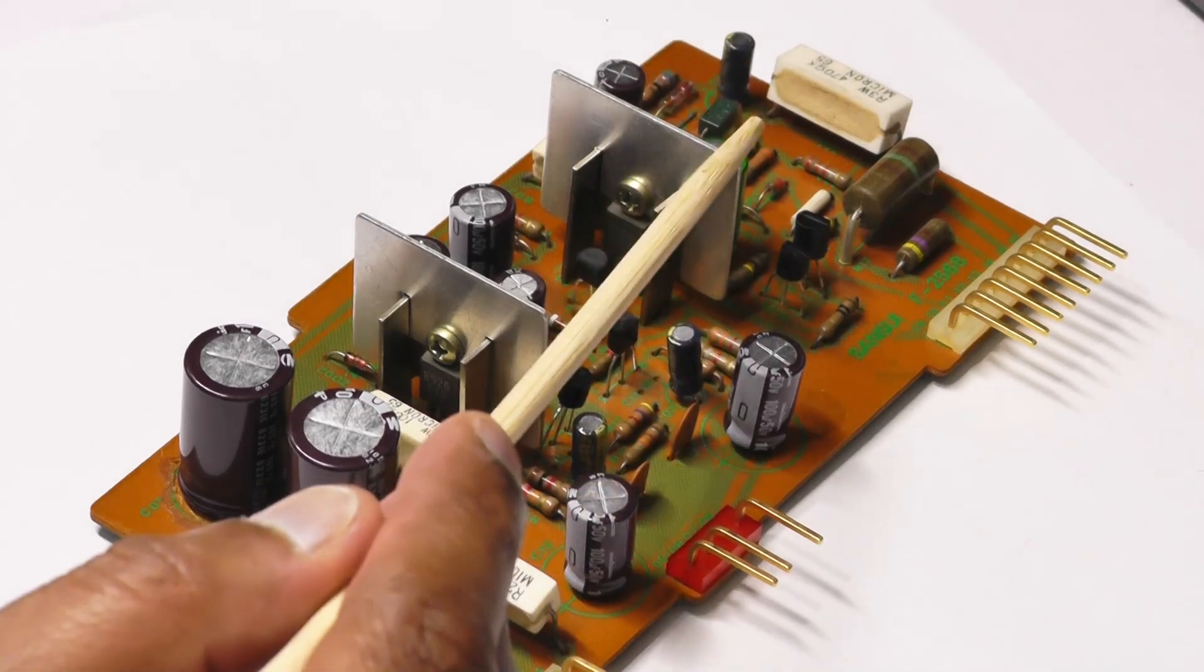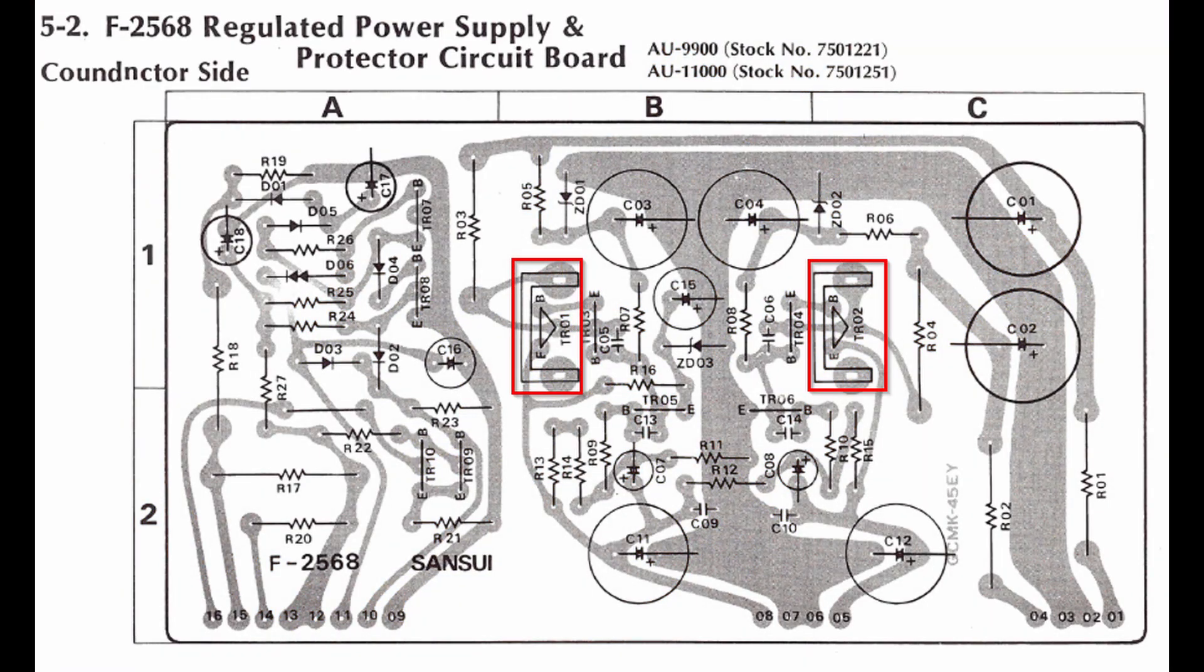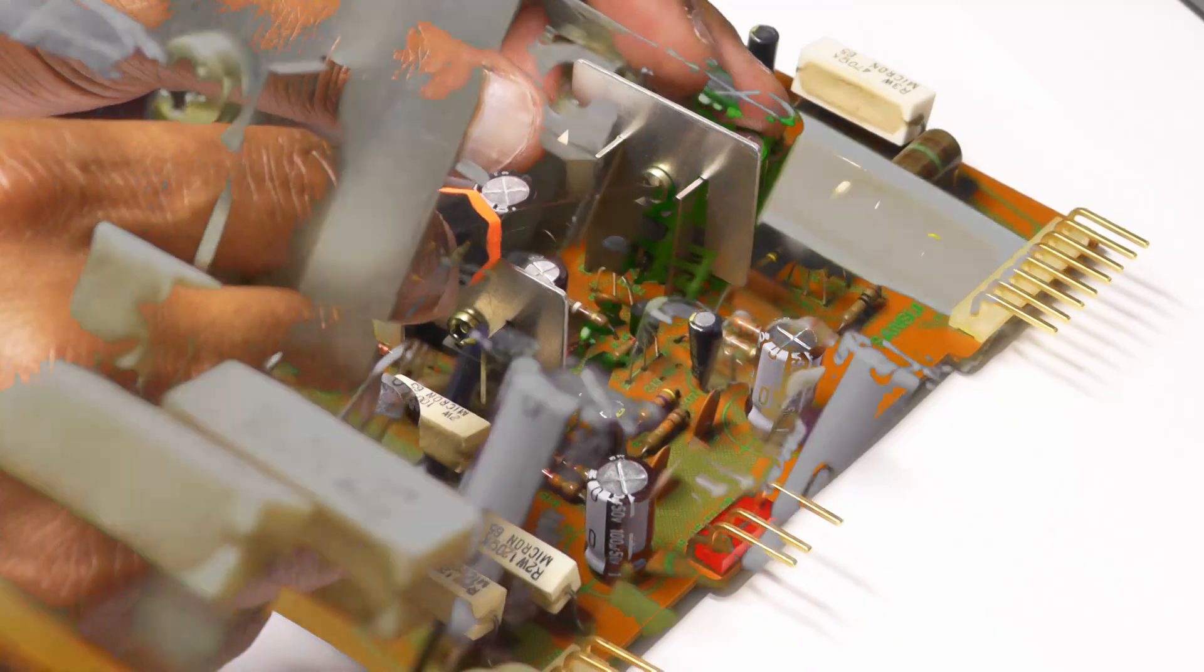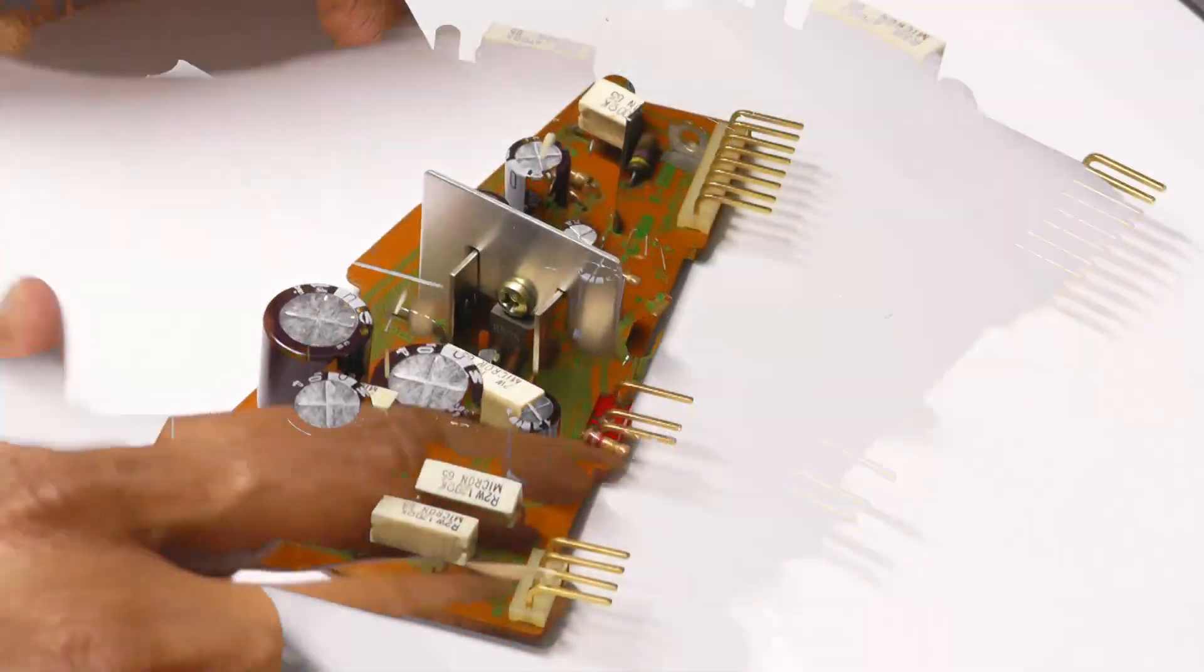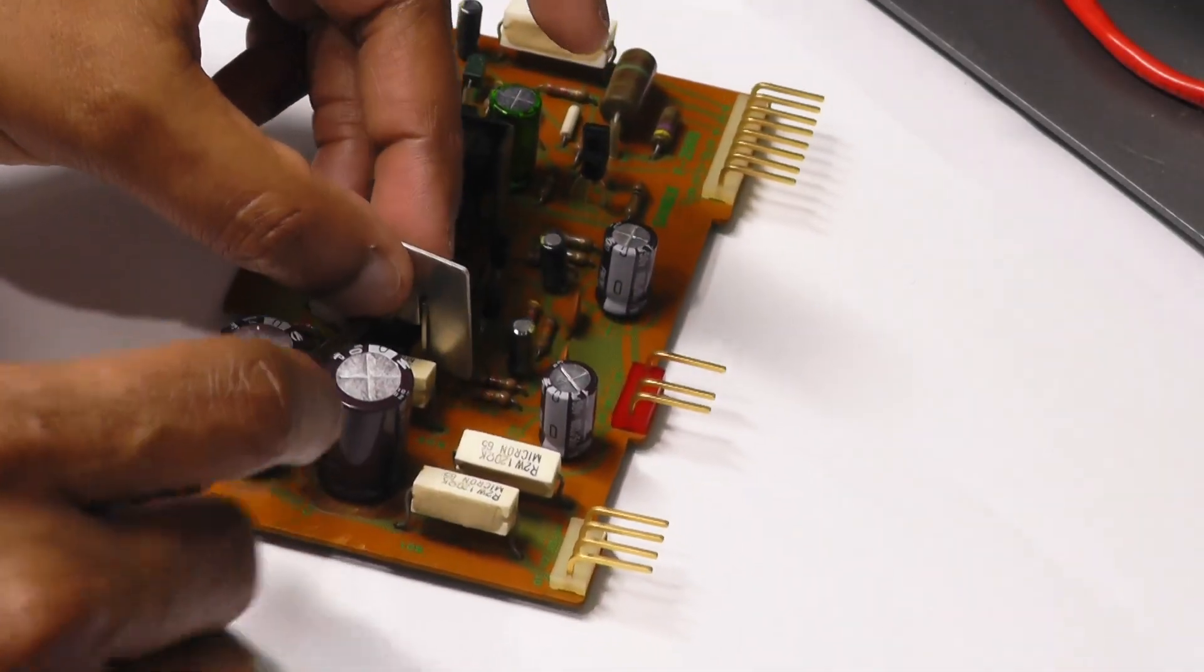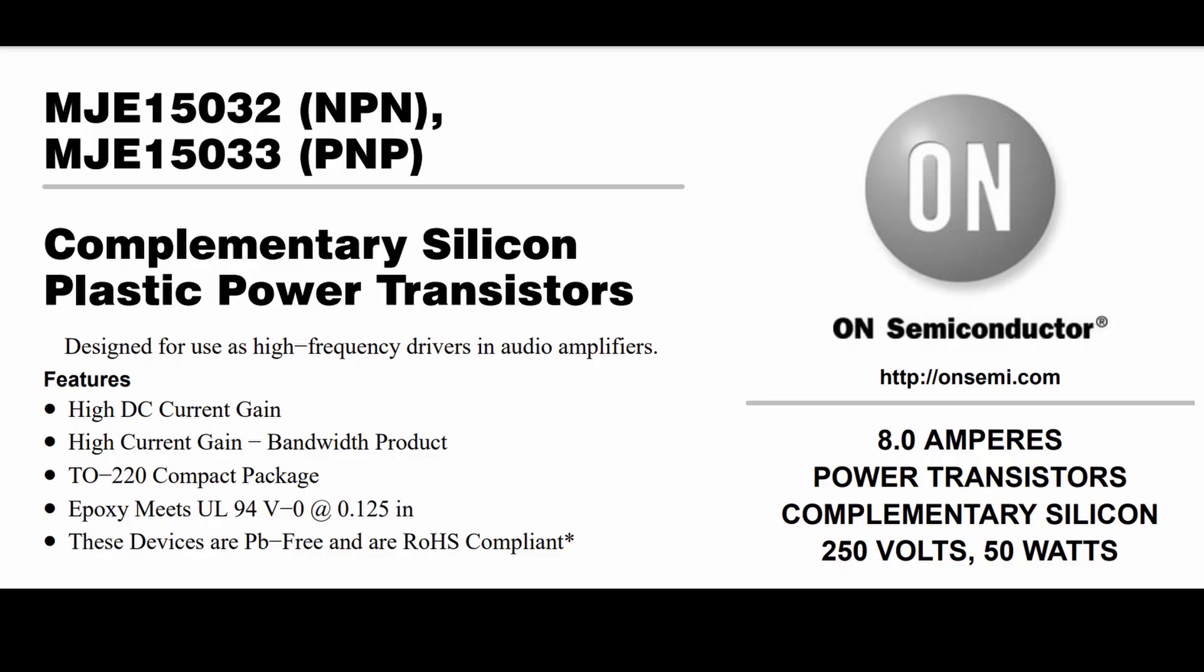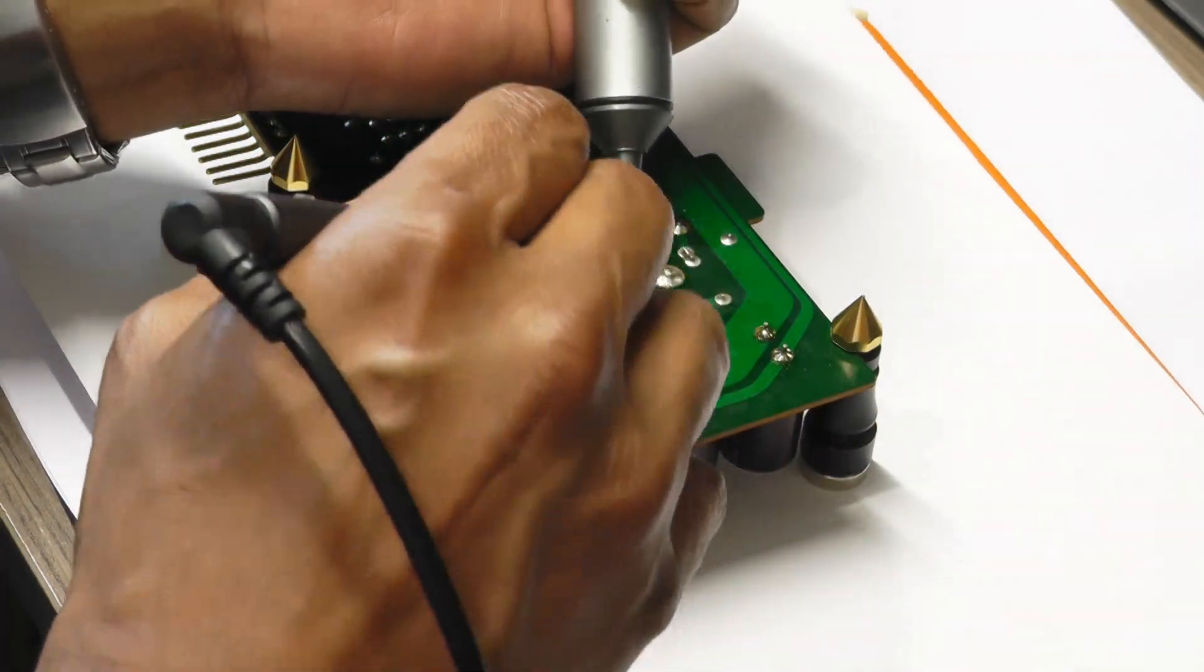Okay almost there, next step will be replacing these two power transistors. 2SB526 and 2SD356. I don't think anything wrong with them but they've been working quite hard close to 50 years now, the new one can handle more current and dissipate more heat as well. So 2SB526 will be replaced with MJE15033G to be precise and the 2SD356 will be replaced with MJE15032G. Both have same pin order so it goes straight in hassle free.